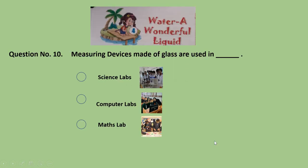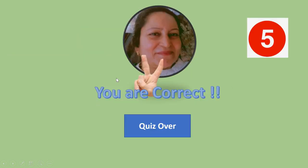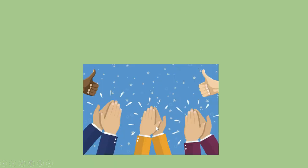This is the last question of the quiz, students. Question 10: Measuring devices made of glass are used in DASH. Where are they used — science labs, computer labs, or maths lab? Computer labs — wrong. Maths lab — again wrong. Science labs — very much correct! The quiz gets over here.